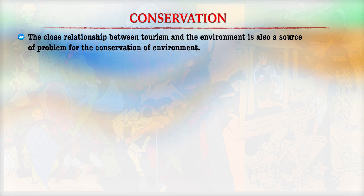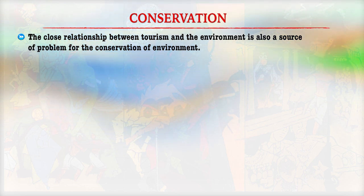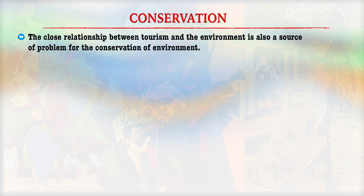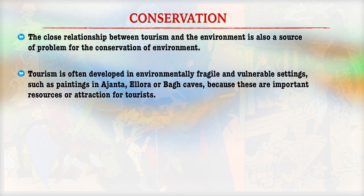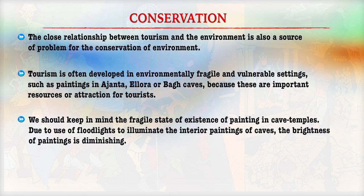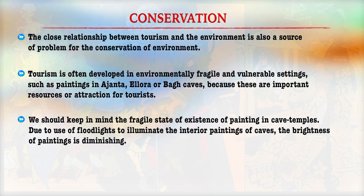In terms of conservation, we must understand that there is a close relationship between tourism and environment, and it is essential for us to conserve paintings. Tourism is developed in environmentally fragile and vulnerable settings, such as when we find the paintings in Ajanta, Ellora, and Bagh Caves. It is important that when developing tourism using flood lights to illuminate the interior paintings of these caves, the brightness of these paintings may diminish.